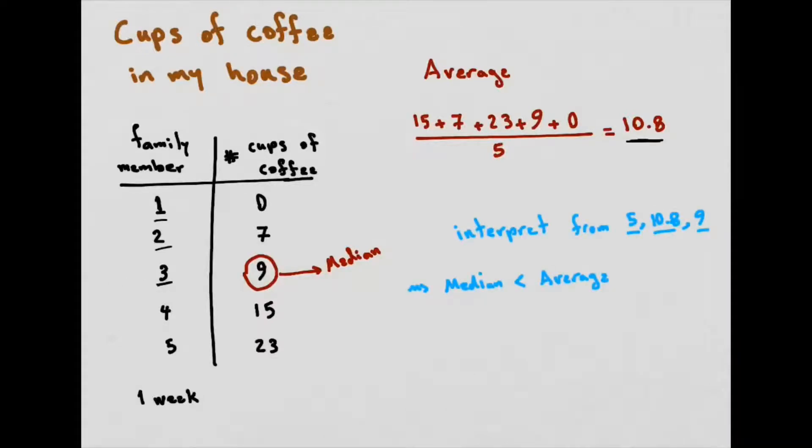So just from the fact that I have five entries, an average of 10.8 and a median of 9, I can already interpret something about my data without actually knowing any of the data points. We can see that the average is actually bigger than the median. The median is happening in the middle at the third person, which means the second and the first entry have to be lower than the median. What that already tells me is that more than half, three-fifths of my data are actually less than my average. So that must mean that the two numbers that are bigger than nine must be much bigger in order to pull the average up and make it 10.8.